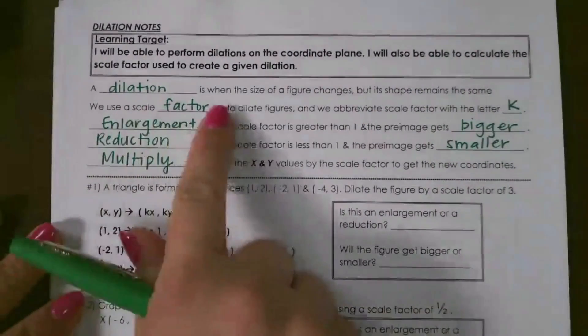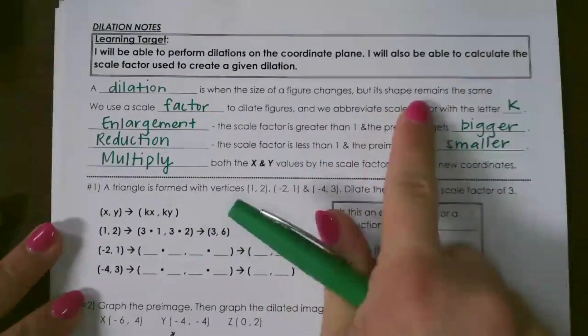Let's take a look at dilations. A dilation is when the size of a figure changes, but its shape remains the same.